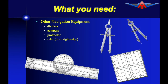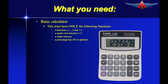You will also need some other navigation equipment. CASA lists four sets of items that you're allowed to have, and it doesn't have to be exactly as illustrated here. You will also need a calculator — a basic four-function calculator. It can only have the four basic functions, can include a square root function which you do need, it can have a single memory but not multiple memories. Percentage is not necessary but it can have a percentage function. Anything more than that is outside what CASA will permit in their exams.